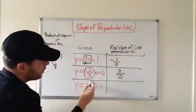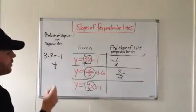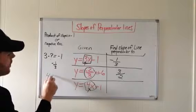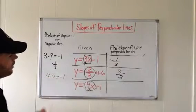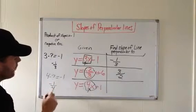And finally, down here, y equals 4x plus 1. Our slope is 4, so let's do the product. 4 multiplied by something equals negative 1. Therefore, slope is negative one-fourth.